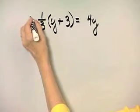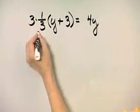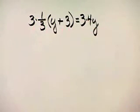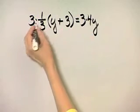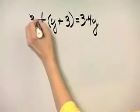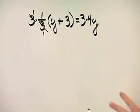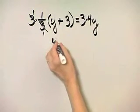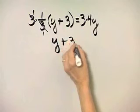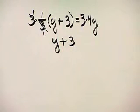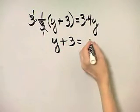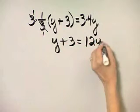I'll multiply the left side of this equation by 3 and the right side of this equation by 3. Now, what happens? 3 times 1 third becomes 1, so the left side simply becomes Y plus 3. The right side is 3 times 4Y, which is 12Y.